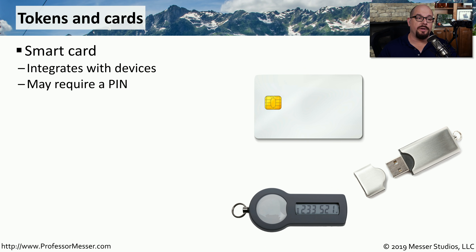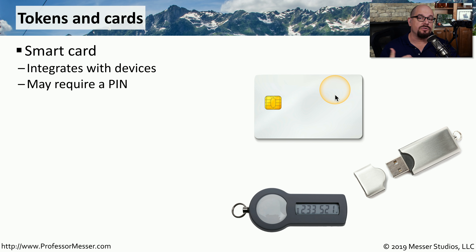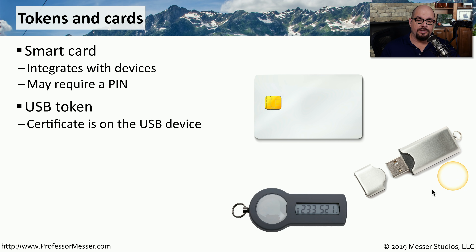Some types of physical security involve token-based access, which means you need some type of device to provide a token or certificate to gain access to a resource. Smart cards are very commonly used with desktop and laptop systems — they can be integrated with an ID card, and then you insert that card into the computer or the door to gain access. These are often combined with a personal identification number, so you have to not only have the card but know the secret number. A USB token is another common way to provide token-based access, where the certificate or token goes on the USB drive and is inserted to gain access to the resource.